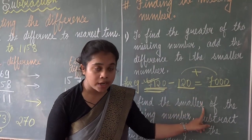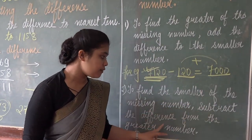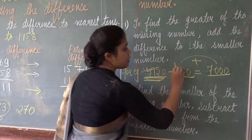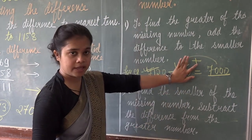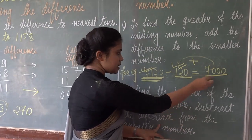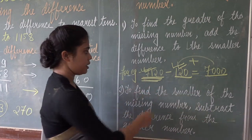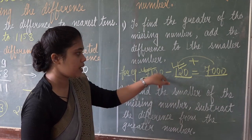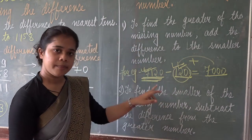To find the smaller of the missing number, subtract the difference from the greater number. Suppose if this number is missing, then you subtract the difference from the greater number. For example, subtract 7,000 from 7,120 and you will get the smaller of the missing number.